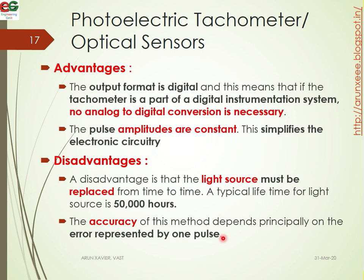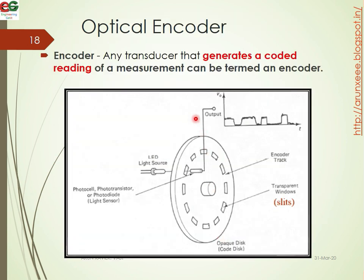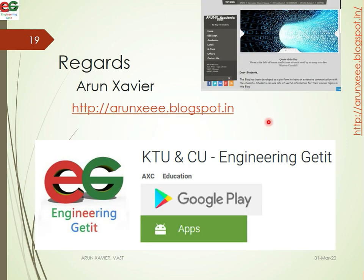The next topic is the optical encoder. An optical encoder is a transducer that generates a coded reading of a measurement. It uses the same principle with a light source and a phototransistor. This concludes the discussion on optical sensors and proximity sensors for RPM measurement. Thank you all, see you in my next video.